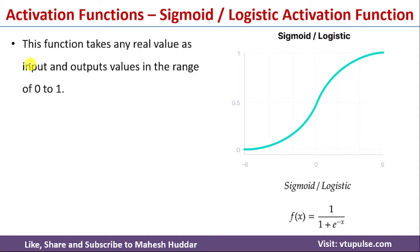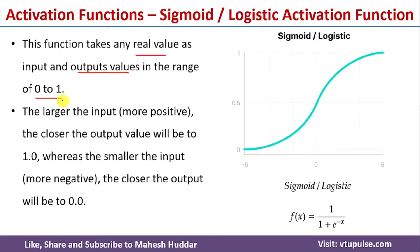The sigmoid function takes any real value as input — for example, the weighted sum may be any real value that will be given as input to this sigmoid function. The output of the sigmoid function ranges between 0 and 1. Mathematically, the sigmoid or logistic function is defined as f(x) = 1 / (1 + e^(−x)), where x is the weighted sum. When you pass the weighted sum to this function, you get an output in the range of 0 to 1.